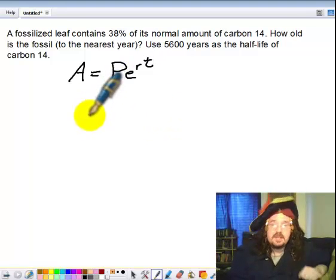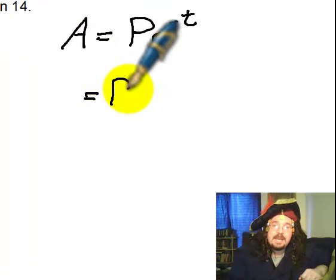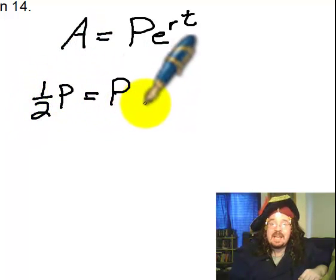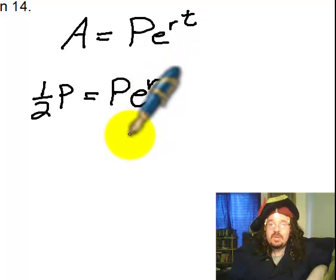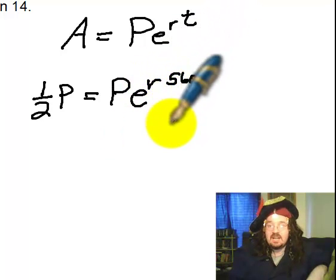So the first thing I need to do is find the rate. If I know I had P amount to start with, and I end with one half of that at the half-life, R I don't know, and T is 5,600 years.